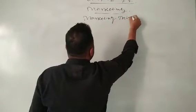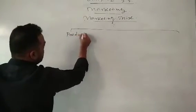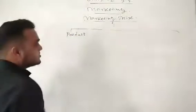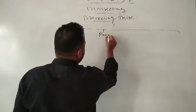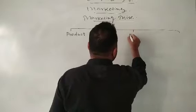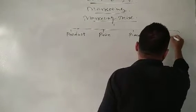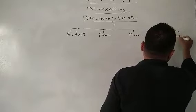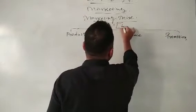The marketing mix is a combination of four P's: the first one is Product, which we have already discussed; then Price, then Place, and then Promotion. So it is a combination of these four P's.